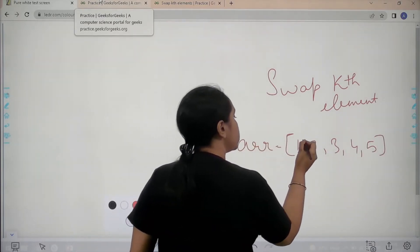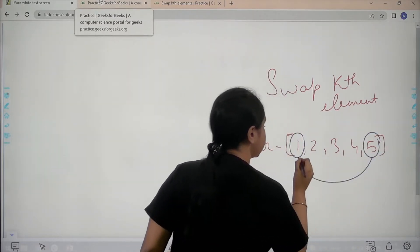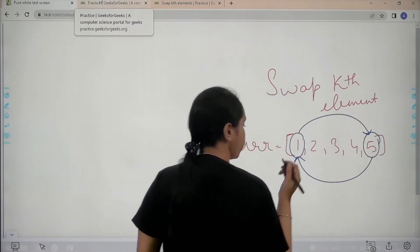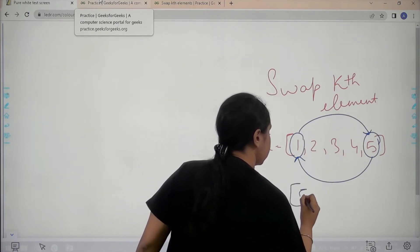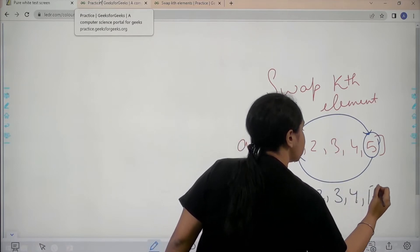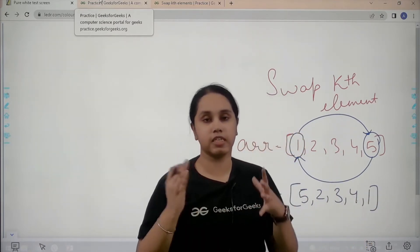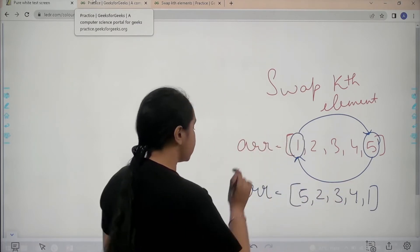So what do we need to do is we need to switch the first element with the last element. So this is what we have to do and then we need to print this. Basically we need to swap the first and the last element and then we need to print the array. So this is the question.